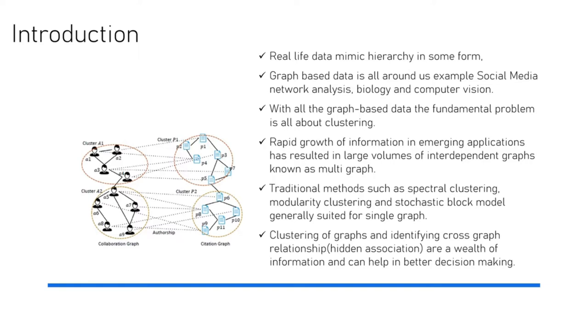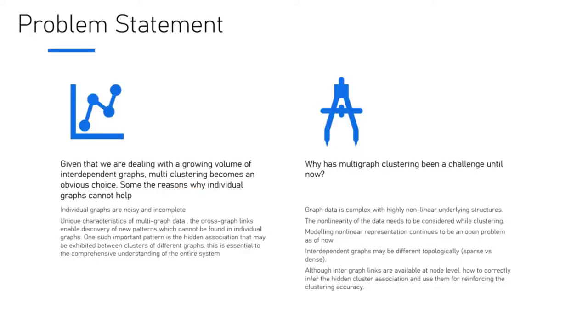We've seen a lot of data growth in the last decade resulting in large volume interdependent graph data, also called multi-graph. The traditional methods today are more suited for clustering single graphs, typically spectral clustering, modularity clustering, stochastic block model. When it comes to clustering multi-graph, the complexities are very many. One challenge is that each graph has different dimensionality in terms of embedding, and trying to compare different dimensionality data is a nightmare. Clustering graphs and identifying cross-graph relationships can help make better decisions.